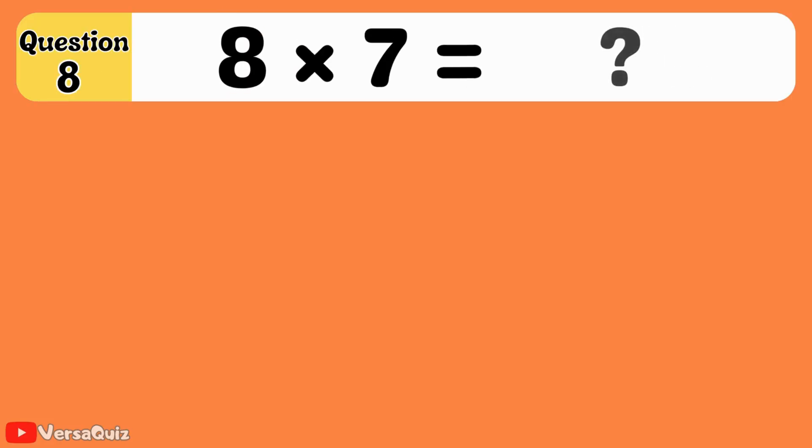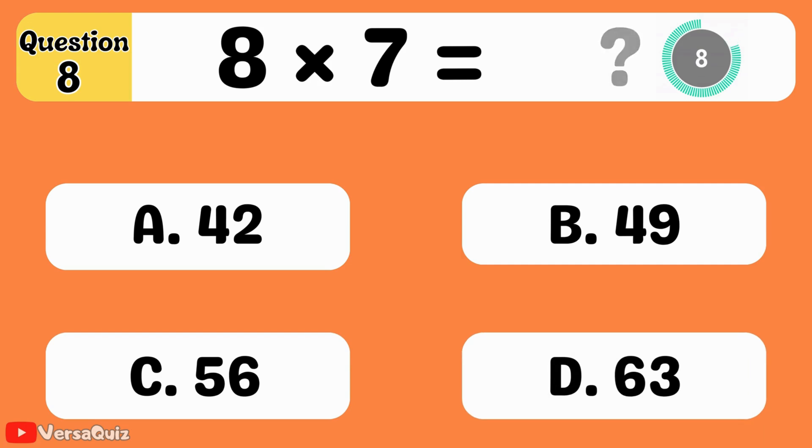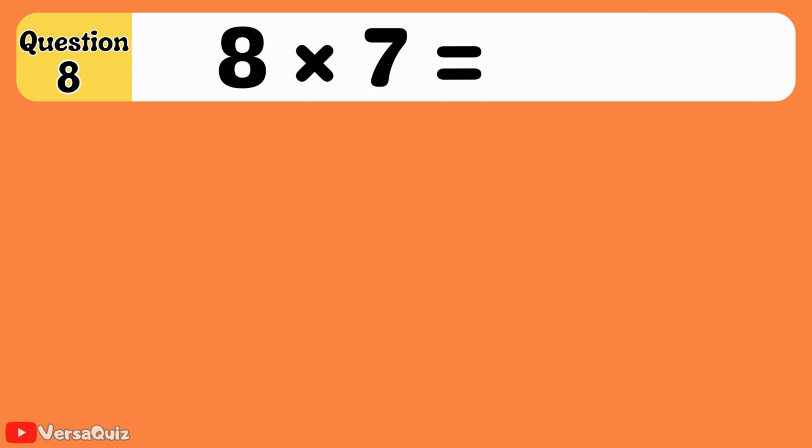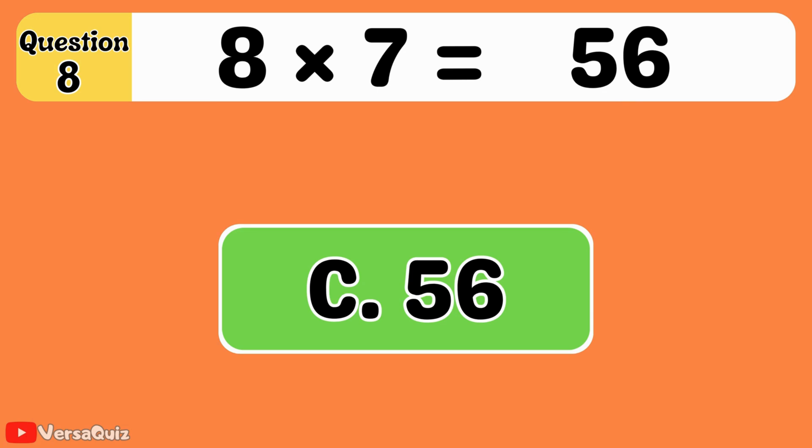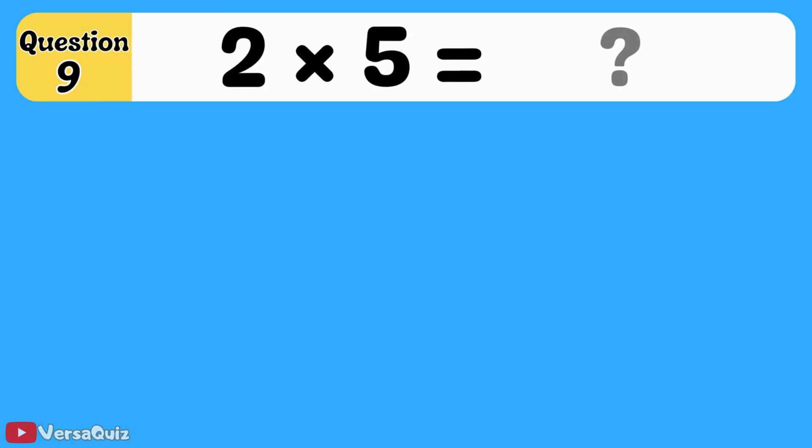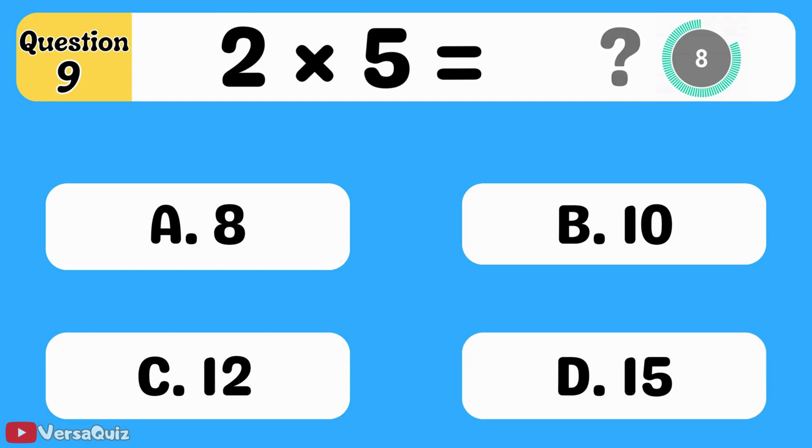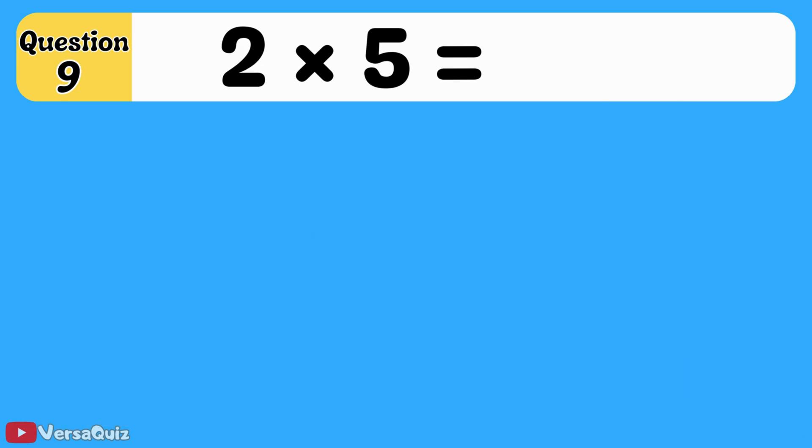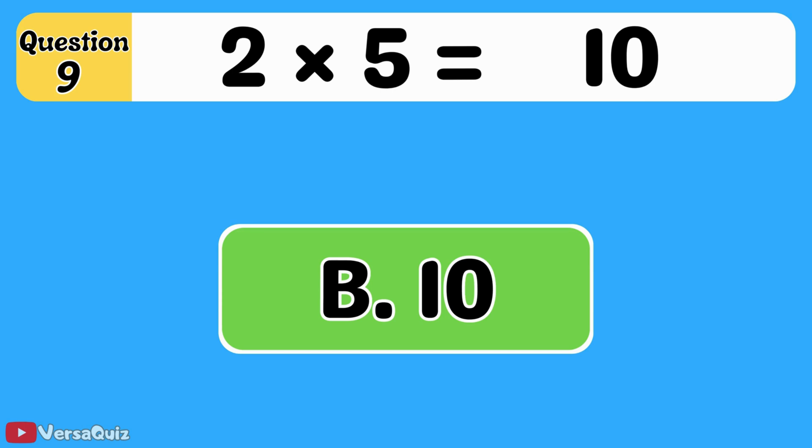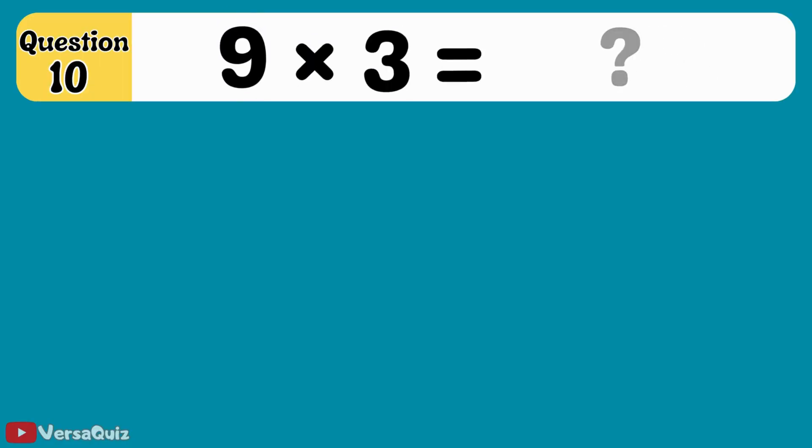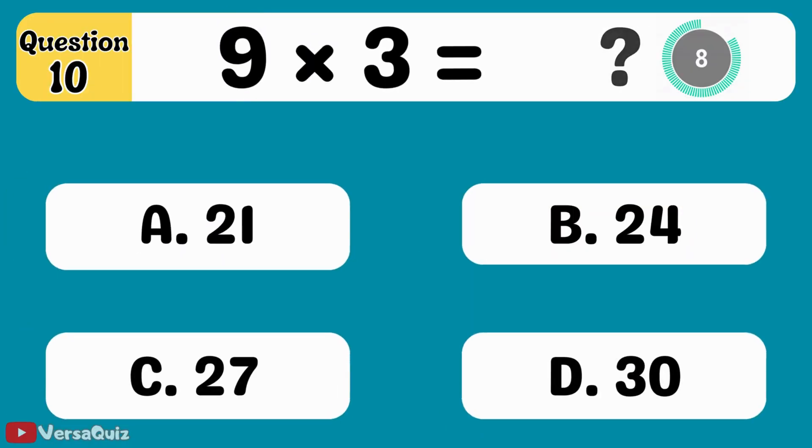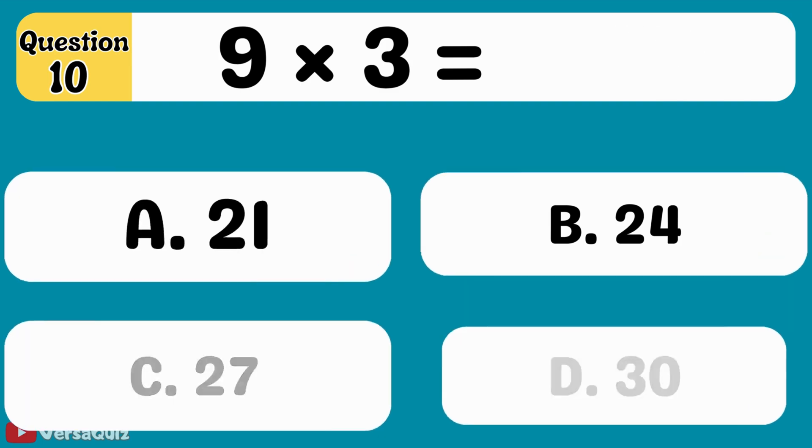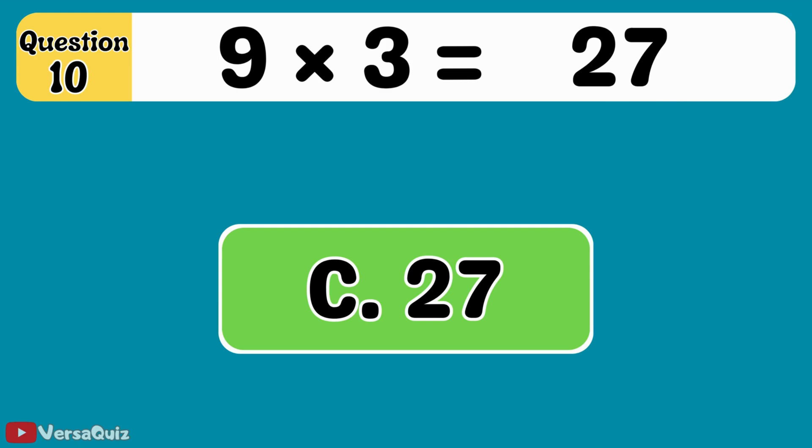Next question. What is 8 times 7? 56. 8 times 7 equals 56. Multiply 2 by 5. 10. 2 multiplied by 5 equals 10. Next question. 9 times 3 is equal to... 27. 9 times 3 equals 27.